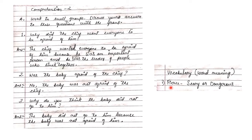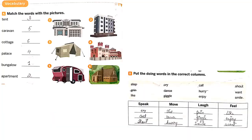Now we will do the vocabulary exercise: match the words with the pictures. Words are given and we have to match them with the pictures. Number one is 'tent' — that matches picture number three, so tent goes first. Number two is 'caravan' — caravan matches picture number two, so caravan goes second.